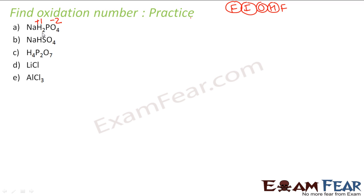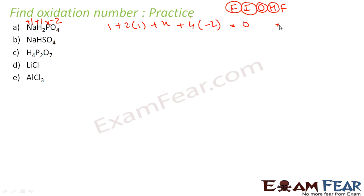I'll apply the first rule: group 1 will have plus 1 oxidation state, so sodium becomes plus 1, and phosphorus let's call x. Total has to be 0, so: sodium is 1, plus 2 hydrogens at plus 1, plus phosphorus x, plus 4 oxygens at minus 2 each, equals 0. You solve this, you get x equals plus 5. So plus 5 is the oxidation state of phosphorus.